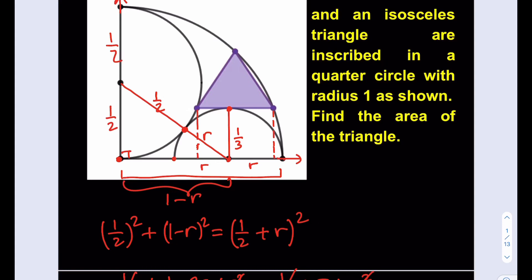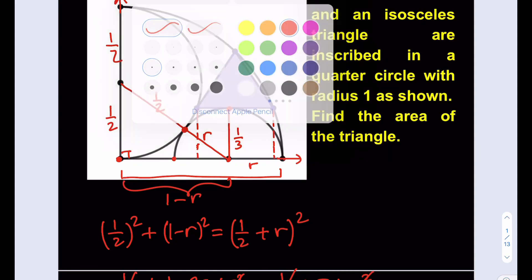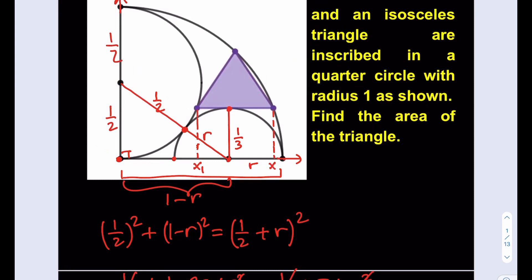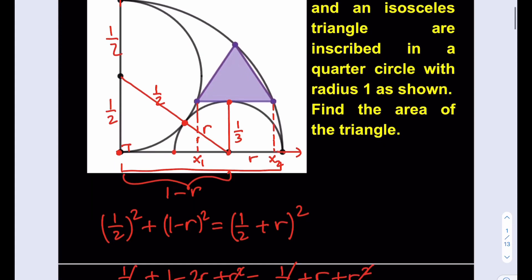Let's designate variables. I'll call the x-coordinate of one base vertex x1 and the other x2. The y-coordinates are constant — both vertices of the base share the same y-value. Since the radius of the smaller semicircle is 1/3, the base of the triangle lies along y = 1/3. My goal is to find x1 and x2; from there I can calculate the base, and using the isosceles property find the height of the triangle.